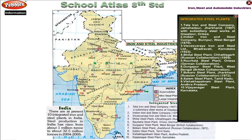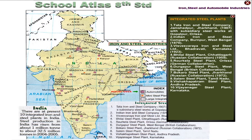Integrated Steel Plants in India include: Tata Iron and Steel Company, Jamshedpur, Jharkhand (1907), with subsidiary steel works at Gopalpur, Orissa; Indian Iron and Steel Company, Burnpur, West Bengal (1870); Visvesvaraya Iron and Steel Limited, Bhadravati, Karnataka (1923); Bhilai Steel Plant, Chhattisgarh (Russian collaboration, 1959); Rourkela Steel Plant, Odisha (German collaboration); Durgapur Steel Plant, West Bengal (British collaboration); Bokaro Steel Plant, Jharkhand (Russian collaboration, 1972); Salem Steel Plant, Tamil Nadu; Visakhapatnam Steel Plant, Andhra Pradesh; and Vijay Nagar Steel Plant, Karnataka.